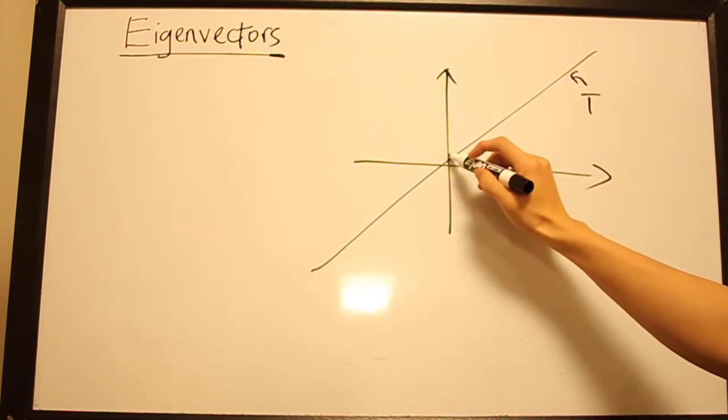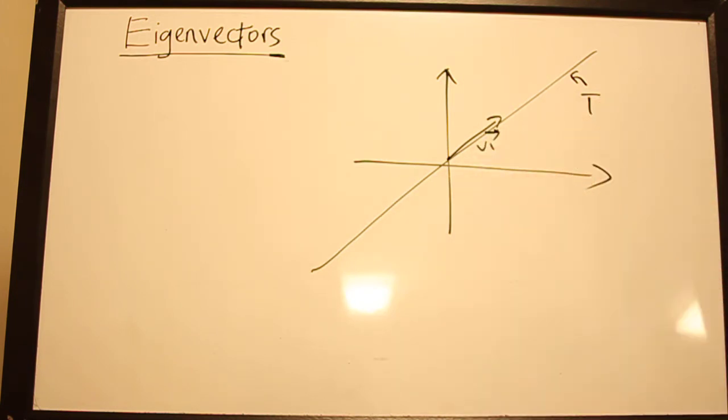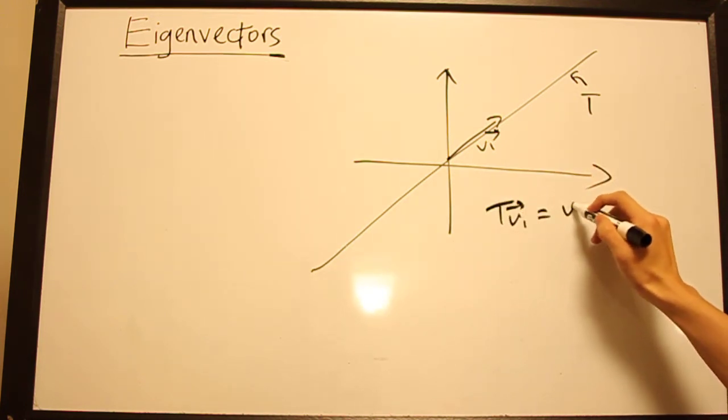So if I have a vector V₁ which is along this line, the action of T on V₁ does nothing to V₁. So you can write that as T(V₁) equals V₁.